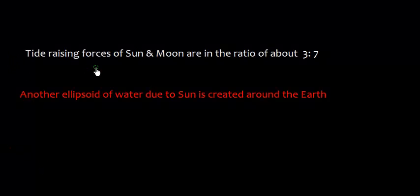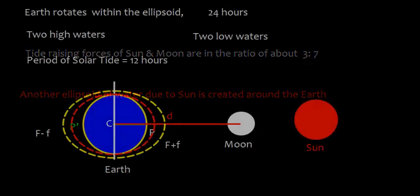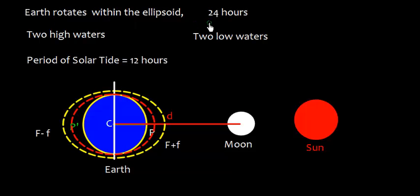So the tide raising forces of sun and moon are in the ratio of about 3 to 7. And we will have another ellipsoid of water due to sun around the earth. The earth rotates within this ellipsoid in 24 hours. There will be two high waters and two low waters at any place. So the period of solar tide is 12 hours. Here in this diagram, this dotted red color indicates that there is another ellipsoid because of differential forces by sun.